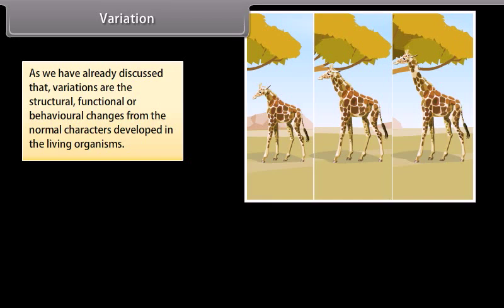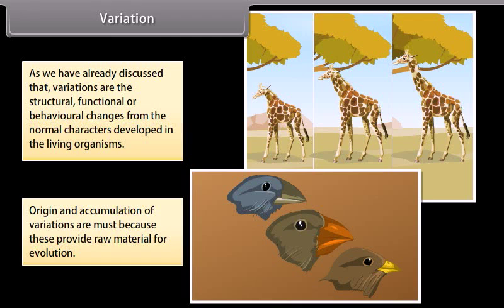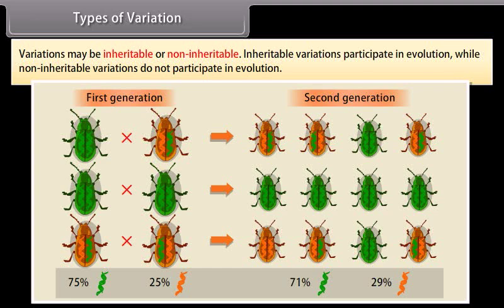Variations are the structural, functional, or behavioral changes from the normal characters developed in living organisms. Origin and accumulation of variations are essential because these provide raw material for evolution. Inheritable variations participate in evolution, while non-inheritable variations do not participate in evolution.